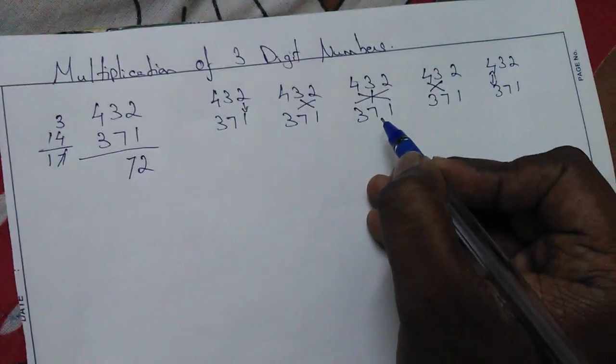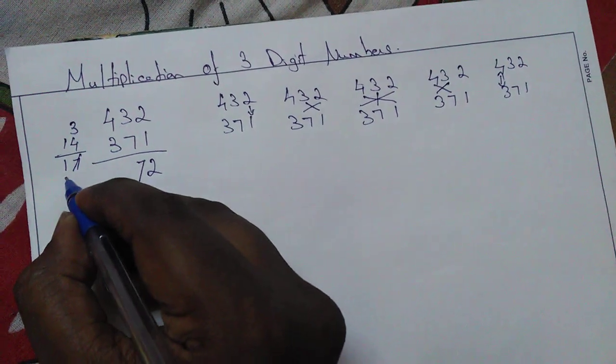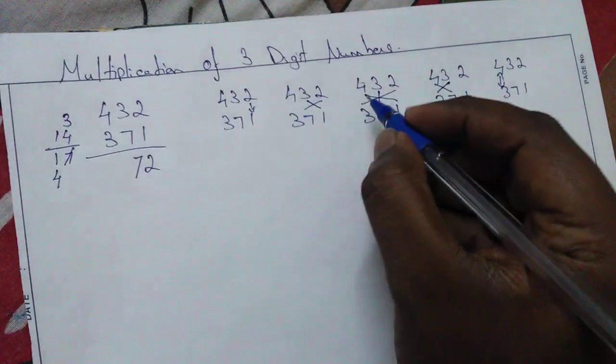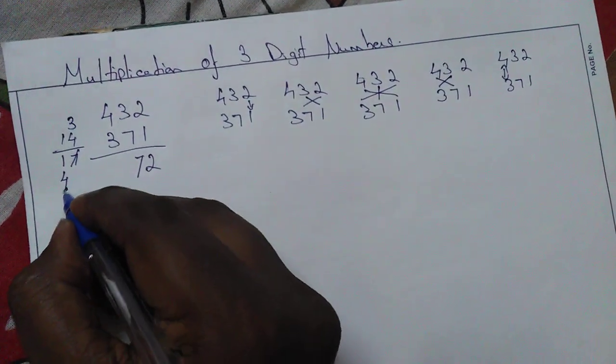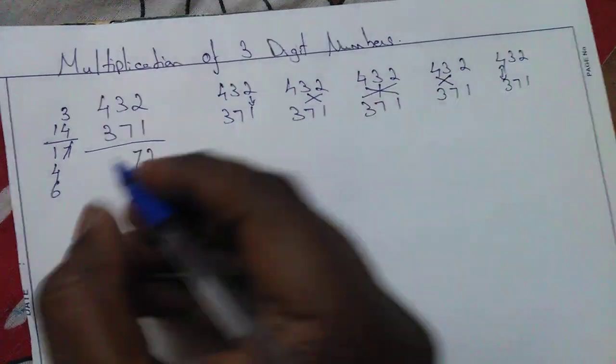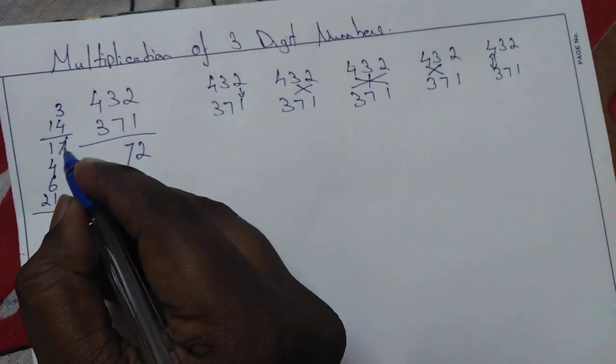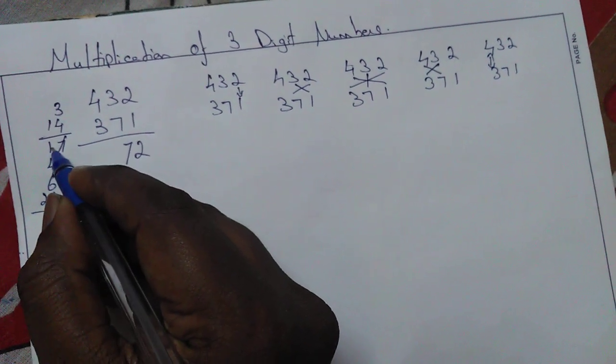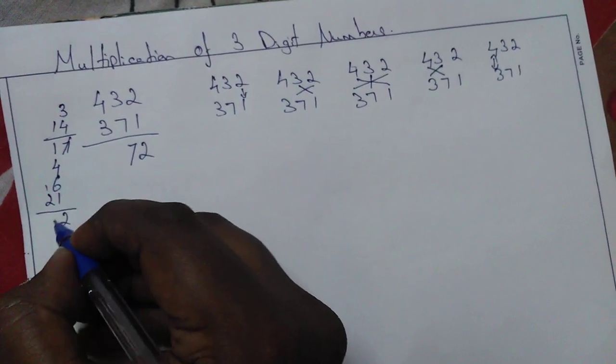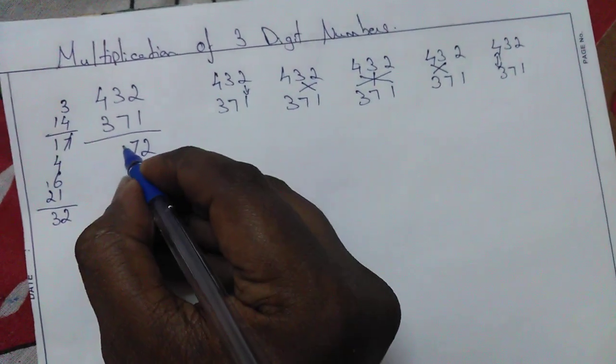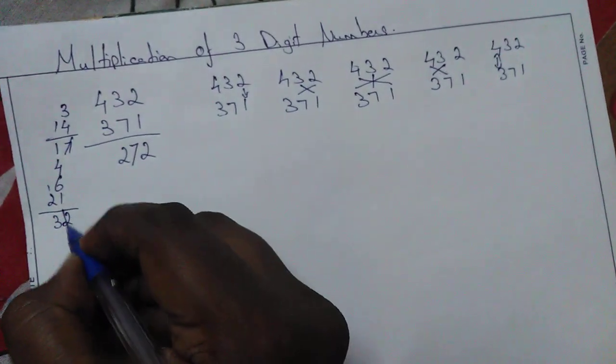Third step: multiply 4 into 1, which is 4. 3 into 2 is 6. 7 into 3 is 21. Let's add everything: 6, 4, 10, 11, 12, plus 3 is 32. Let's put 2 here, 3 is the remainder. So the third step is completed.